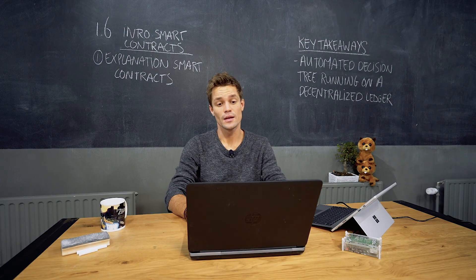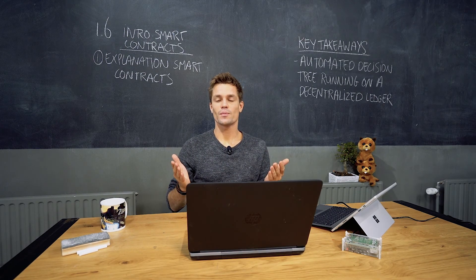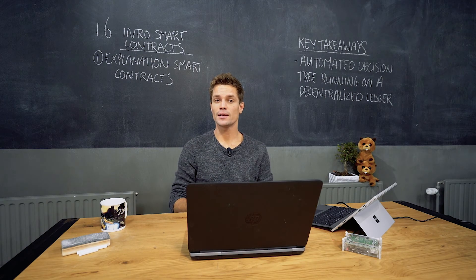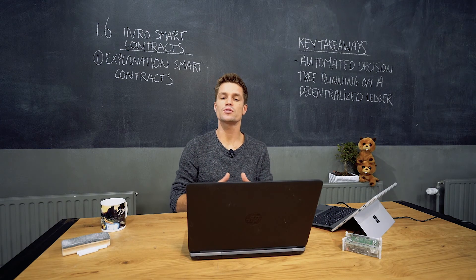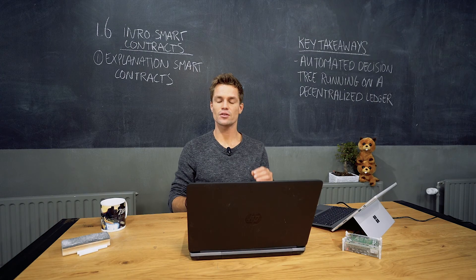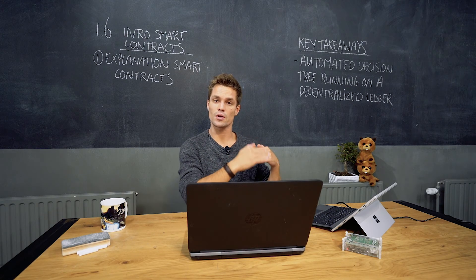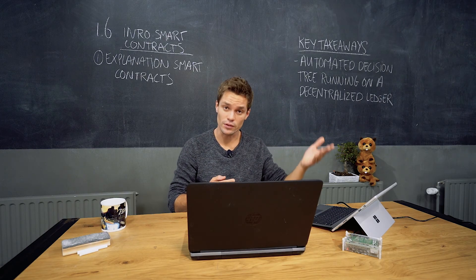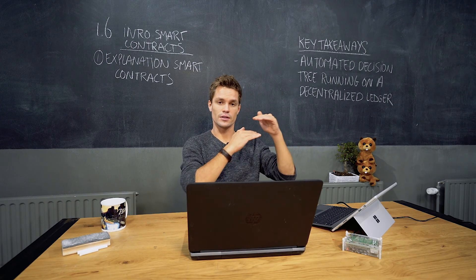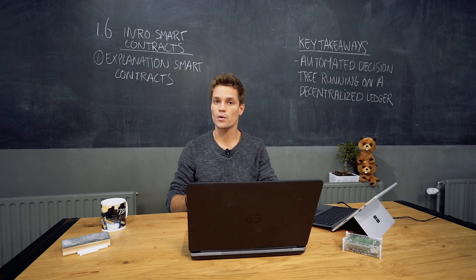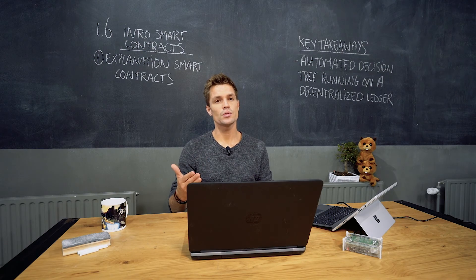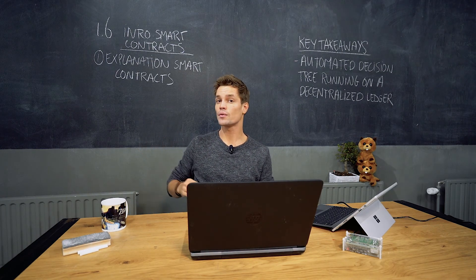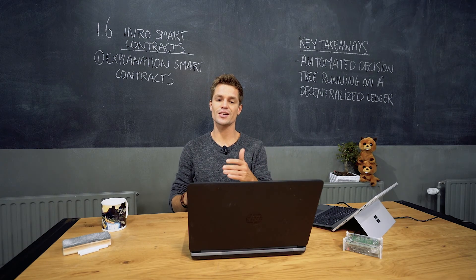The smart contract term was officially created by Nick Szabo in 1994. He defined a smart contract as a computerized transaction protocol that executes the terms of a contract. It is computerized because miners automatically record transactions, and the protocol refers to the consensus protocol — proof of work in the case of Bitcoin and Ethereum.